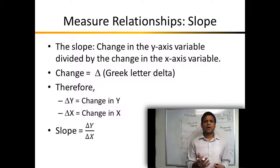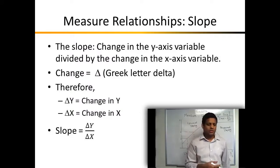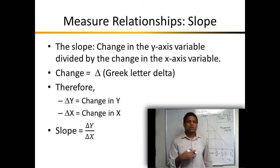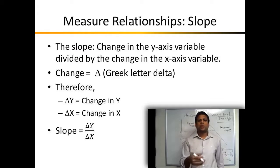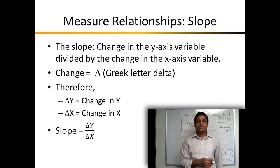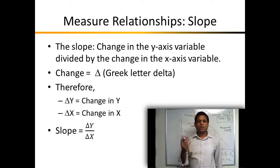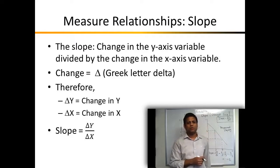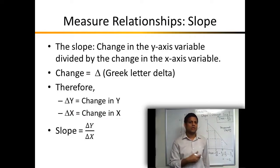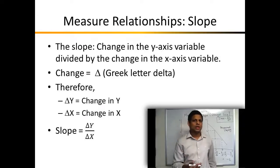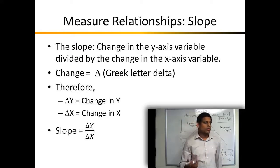The slope is nothing but the change in the value measured on the y-axis divided by the change in the value measured on the x-axis. To represent change, we typically use the Greek letter delta, represented by a triangle. So, delta y means the change in the variable on the y-axis, and delta x means the change in the variable on the x-axis. The slope is simply change in y over change in x.